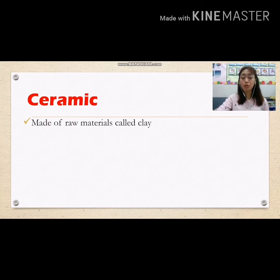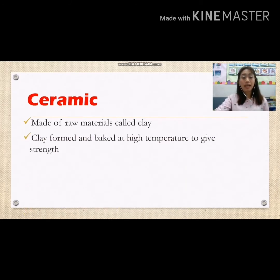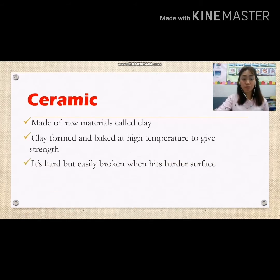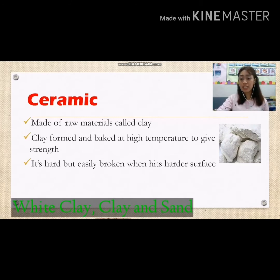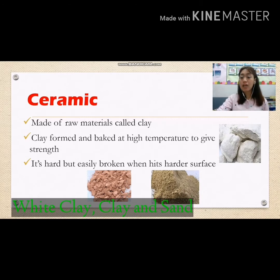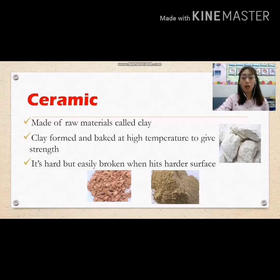Now let's continue with ceramic. Ceramic is made of raw materials called clay. Clay is formed and baked at high temperature to give it strength. It is hard. Examples of raw materials include white clay and sand.